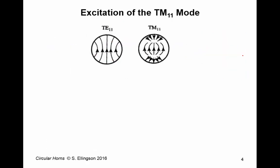Now, there's another mode that we can consider using here, and this is the TM-1-1, transverse magnetic 1-1 mode. Now, these are E-field lines again.